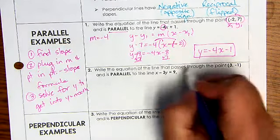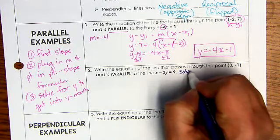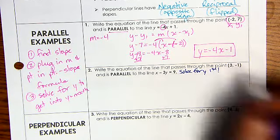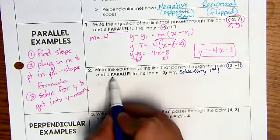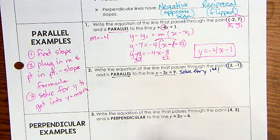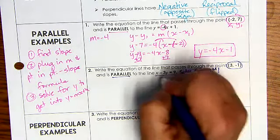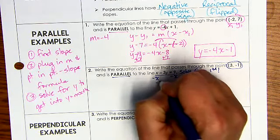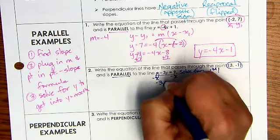Number two is written in standard form. So here we have to solve for y first. Next, we're given a point. We're given a point. We want it parallel to this equation.